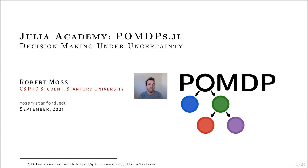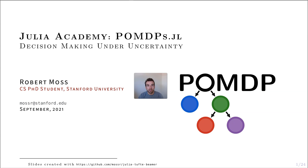Welcome everybody to this Julia Academy course on decision making under uncertainty using the POMDPs.jl ecosystem of packages. My name is Robert Moss. I'm a CS PhD student at Stanford University. Feel free to contact me directly or comment on these videos below if you have any questions or run into any problems. All of these slides, notebooks, and code are available online on the Julia Academy GitHub.